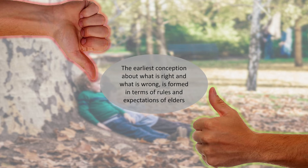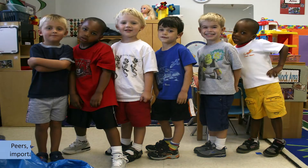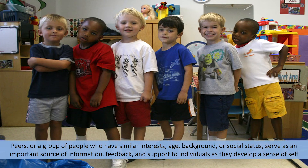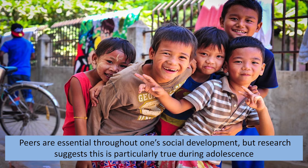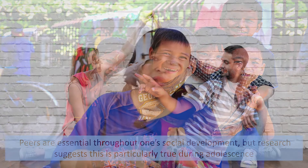Now we are going to talk about how peers contribute to value development. Peers are a group of people who have similar interests, age, background, or social status. They serve as an important source of information, feedback, and support as individuals develop a sense of self. Peers help socialize an individual by reinforcing or punishing behaviours or interpersonal interaction. Research suggests peer influence is particularly strong during adolescence — during the modeling period and the socialization period.